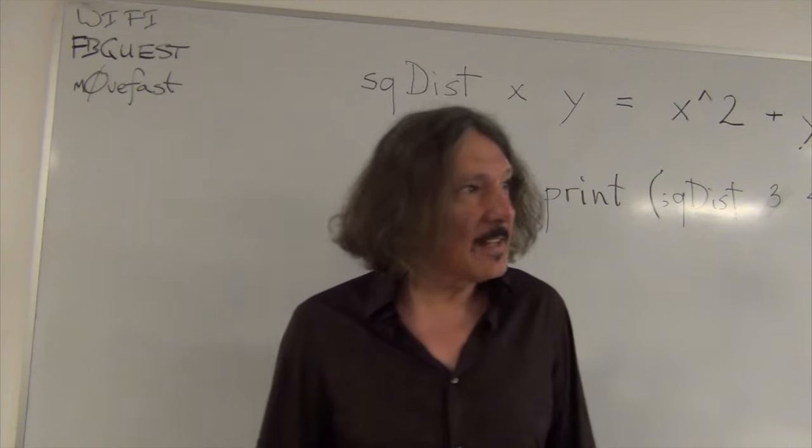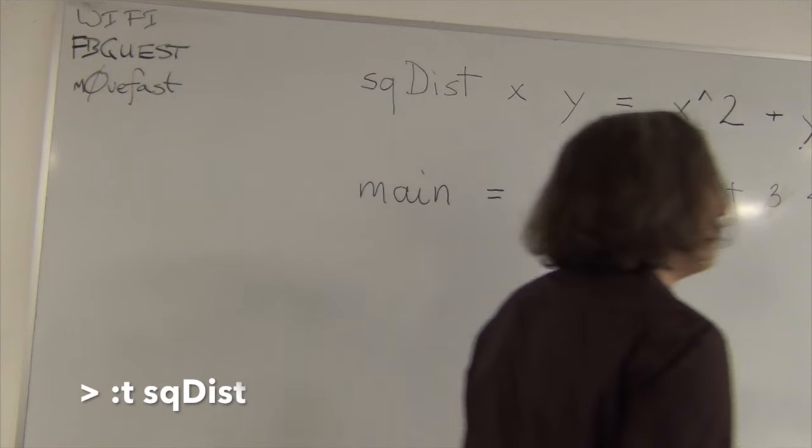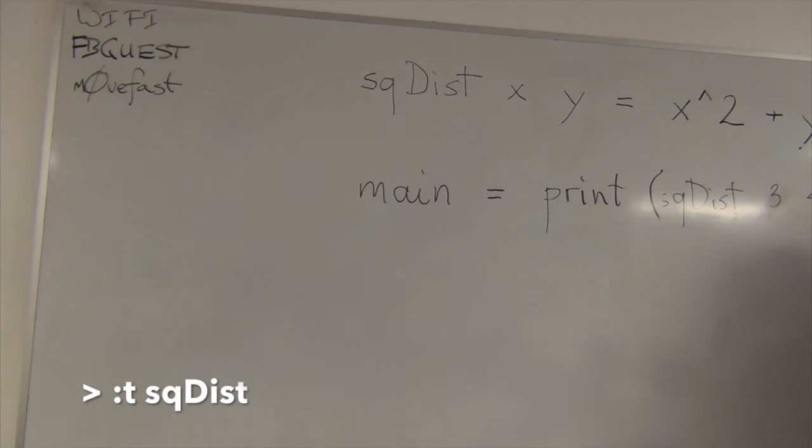And it gives you a relatively easy way to determine what the types are of, say, functions that you define. Exactly. What type signatures are off of. Mm-hmm. Mm-hmm. So, let's find out what is the type of SQDIST. So, column T, SQDIST. Okay. Now, this is complicated, right? This is where the first shock comes to somebody who starts learning. What the heck is this?